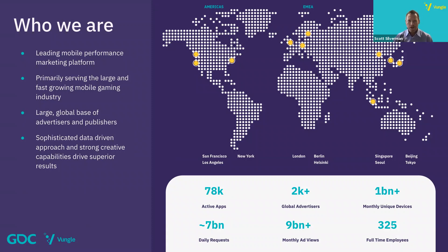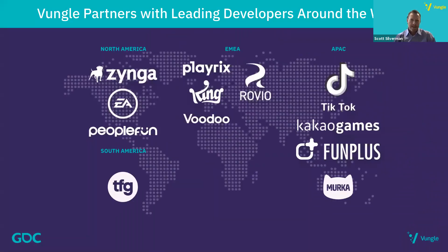A little on Vungle. Vungle functions as a trusted guide for mobile app developers around growth and engagement. We help transform how people discover and experience apps. Almost 80,000 apps leverage our innovative ad experiences to monetize their user experience, and over 2,000 advertisers depend on Vungle to reach, acquire, and retain high-value users worldwide. Vungle's data-optimized ads run on over 1 billion unique devices to drive engagement and increase returns for publishers and advertisers. We run a global organization headquartered in San Francisco, with offices in London, Berlin, Beijing, Tokyo, Seoul, Singapore, Los Angeles, New York, and Helsinki. We work with the who's who of app developers around the world, ranging from indie studios to powerhouse brands like Rovio, TikTok, and Zynga.